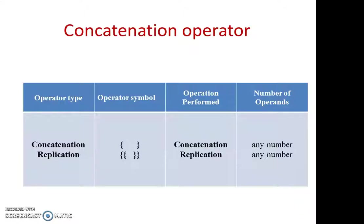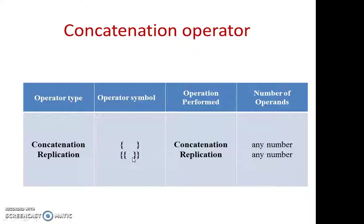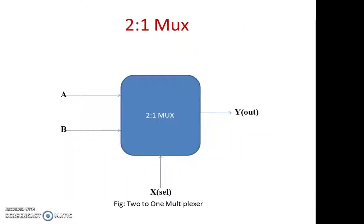For the concatenation operator: if you have gotten two results and want to combine them into a single variable, for example results in a and b, you write: c = {a, b}. The result stored in c will have a in the MSB position and b in the LSB position. If you want to replicate the same value n times, inside the braces you specify how many times to replicate. Examples have been shared in the document.